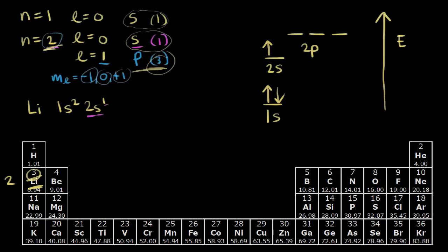Let's do the next element — beryllium, which has four electrons. For beryllium, we can put its fourth electron into the two s orbital and pair up our spins. So the electron configuration for beryllium is one s two, two s two. Each orbital can hold a maximum of two electrons, so we've now filled the two s orbital.